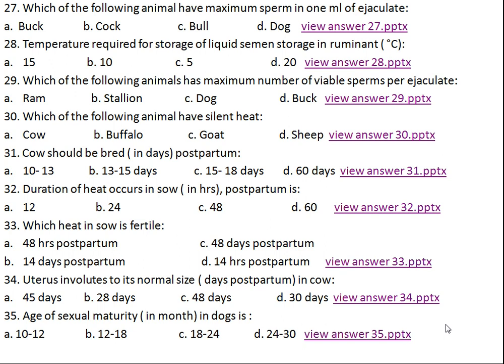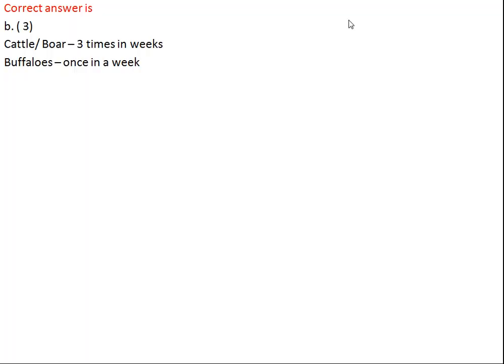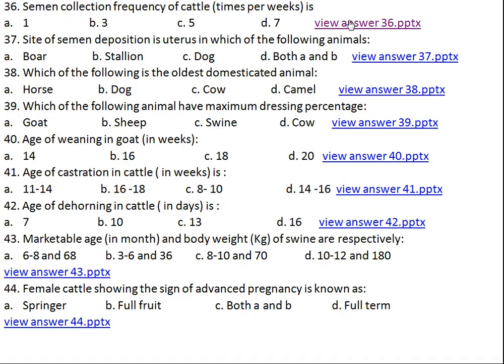Question number thirty-six: semen collection frequency for cattle is how many times per week? Option A: 1, Option B: 3, Option C: 5, Option D: 7. The right answer is 3. In case of cattle and boar, semen should be collected 3 times per week. But in case of buffalo, semen should be collected only once per week.